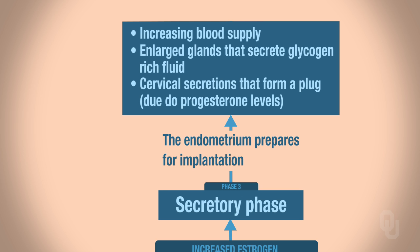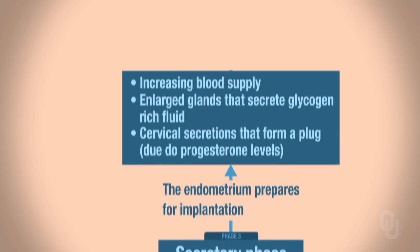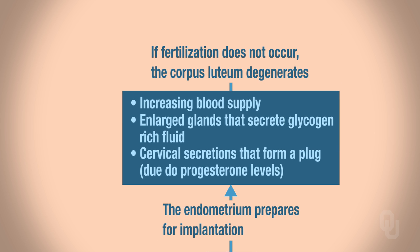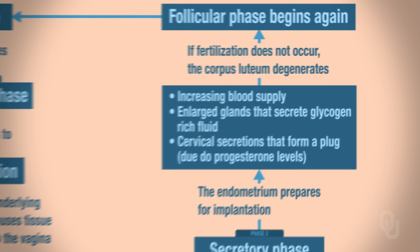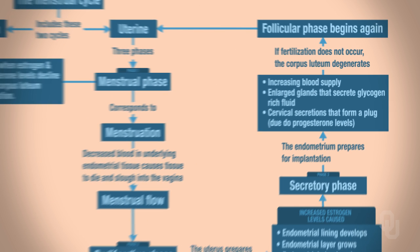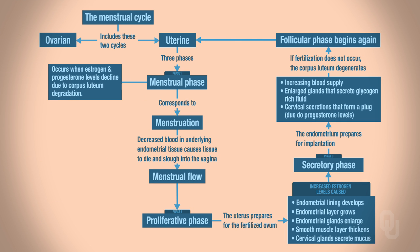If fertilization doesn't happen, the body has prepared for it but it doesn't occur. So if fertilization does not occur, the corpus luteum degenerates, and the follicular phase begins all over again the next month.